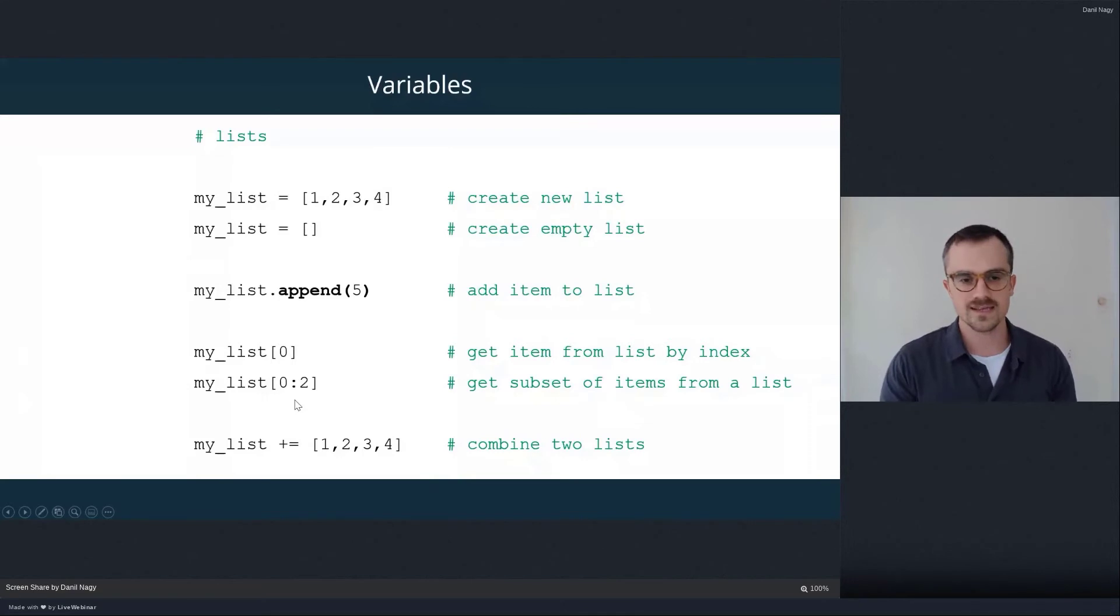We can also extract a subset of elements. So if we supply two positions, two indices separated by this colon, we'll basically extract starting from the position on the left-hand side up until the position on the right-hand side. So this bit of code will actually extract the first two elements from that list, the one at the zero position and the one at the one position.